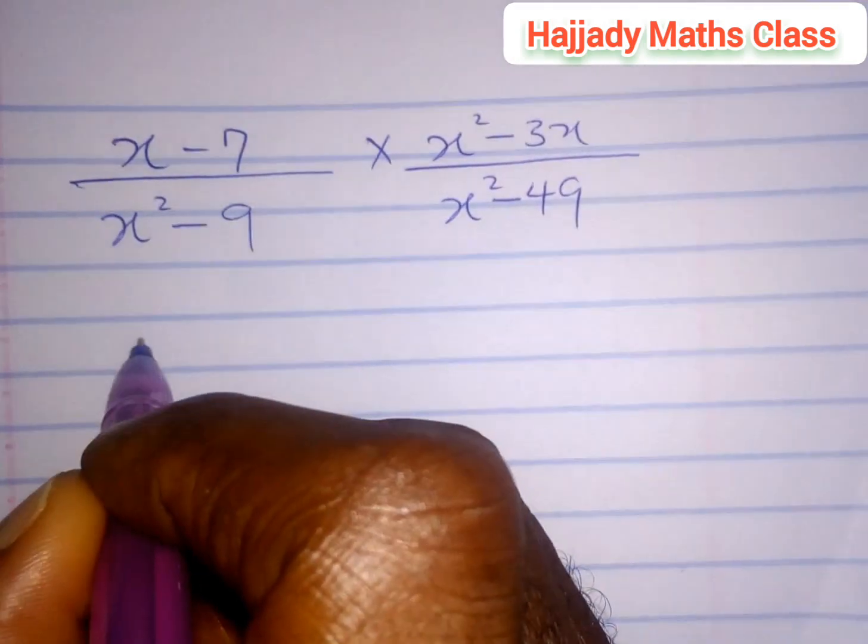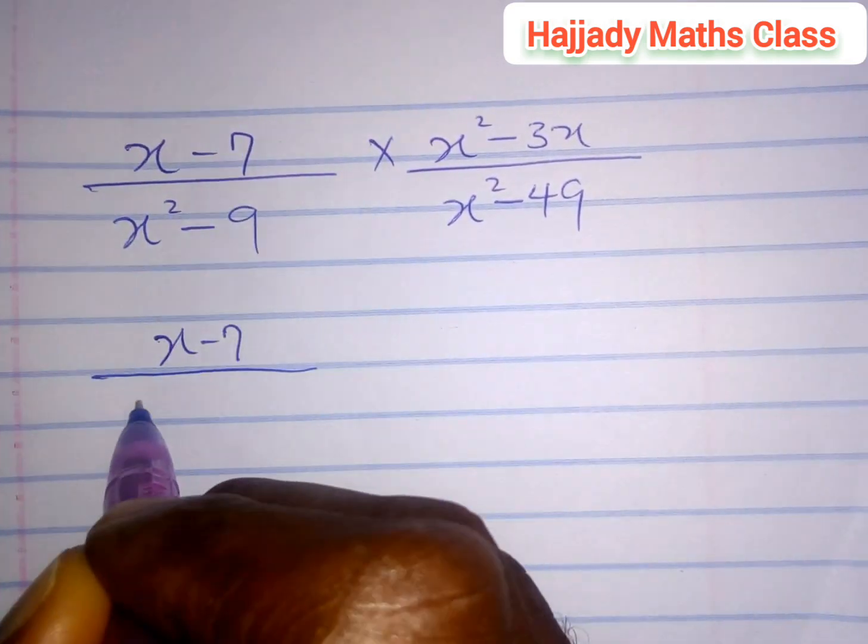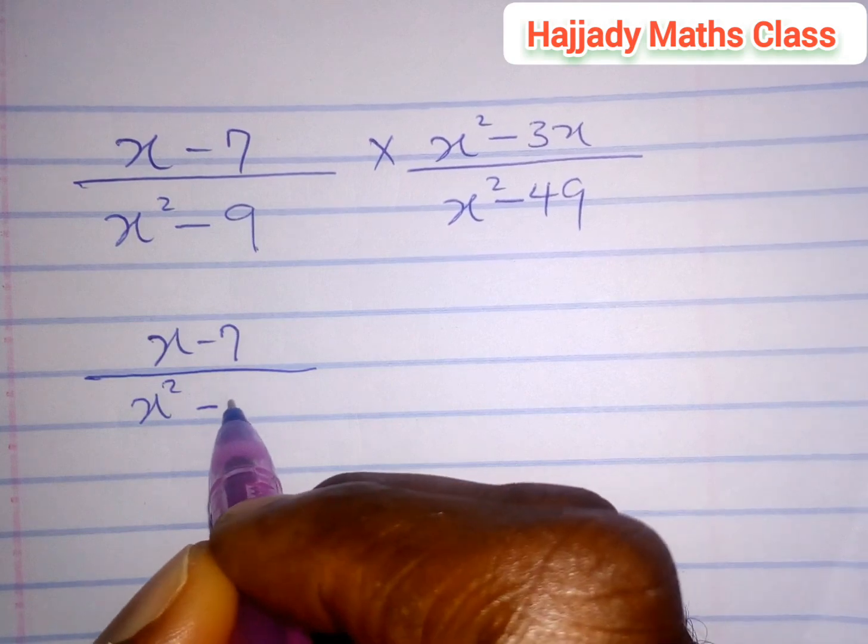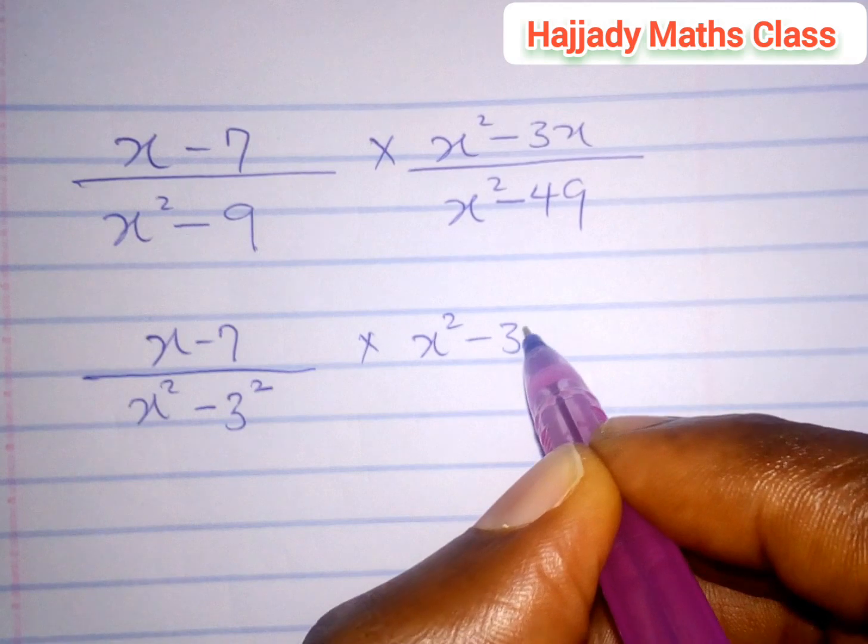Let's proceed. Here we have (x - 7) divided by (x² - 3²), since 9 is a perfect square, we can have it as 3 raised to power 2, multiplied by (x² - 3x).